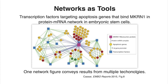Here is a network that expresses multiple kinds of relationships between biological entities. Transcription factors are proteins that control expression of their target genes — in this case, the genes that code for proteins involved in the programmed cell death process of apoptosis. Some of those genes are also affected by the transcriptional co-regulator MKRN1, and this small network describes the state of all of those interactions.